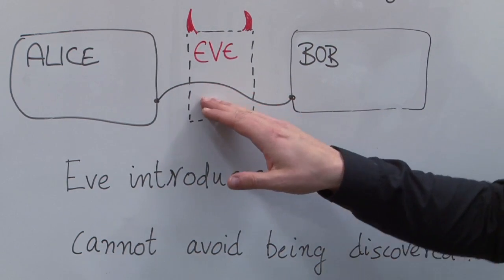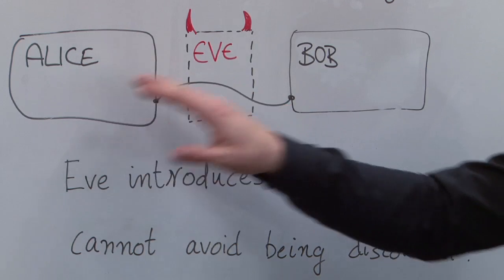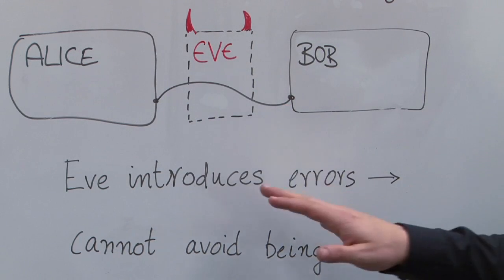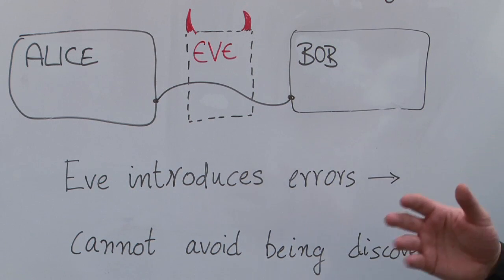An adversary Eve cannot eavesdrop on the communication of Alice and Bob because she will introduce errors and is therefore detected.